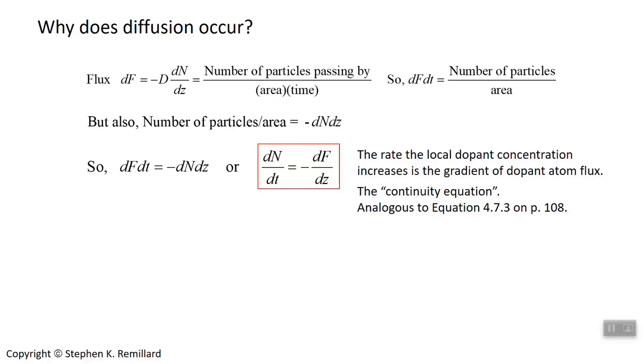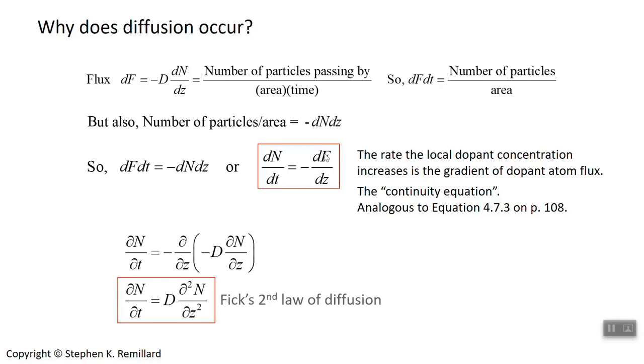Remember, flux is the number of dopants going by per unit area per unit time. That will get smaller as you move to the right in that tube, hence the minus sign again. Put in this expression that we had for the flux from the previous, whoops up here. If I replace the f with minus D dn by dz, I'm going partials on these derivatives now because I think it's suddenly becoming evident that concentration of impurity depends on both time and position. So let's just use the partial symbol to be clear on that.